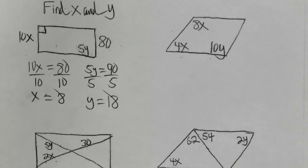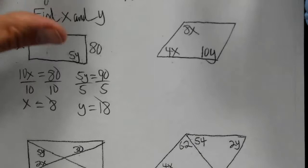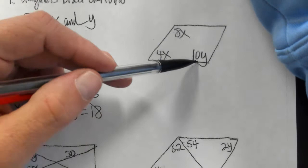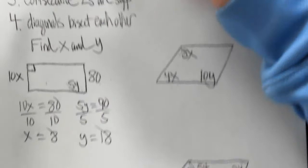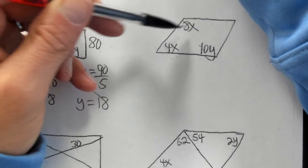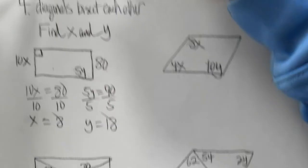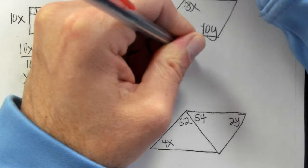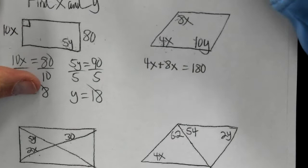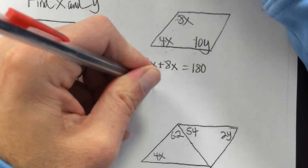In the next problem, we're given two angles in terms of x and one in terms of y. Focusing on the x's: I need to decide whether the two angles with x are opposite or consecutive. They're not across from each other, so they're consecutive. Consecutive angles are supplementary, meaning they add up to 180. The equation is 4x plus 8x equals 180, which gives 12x equals 180. Dividing by 12, x is equal to 15.